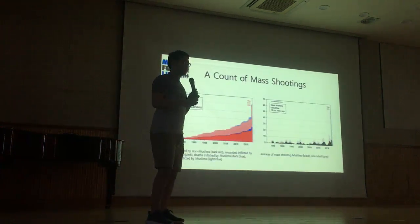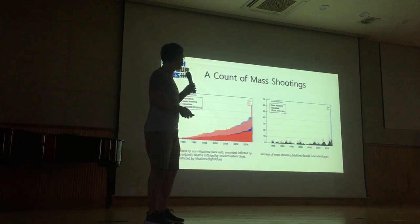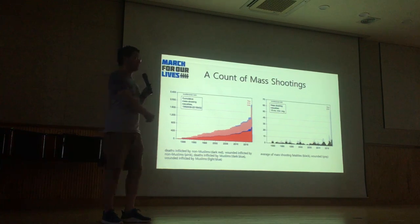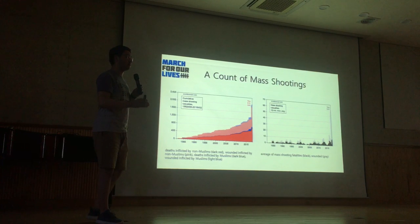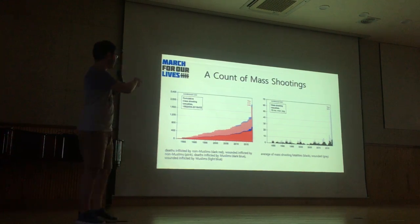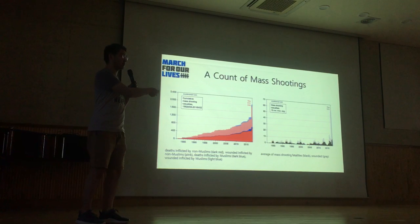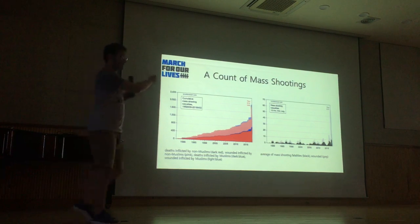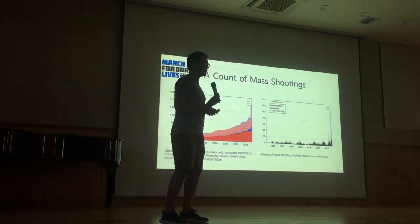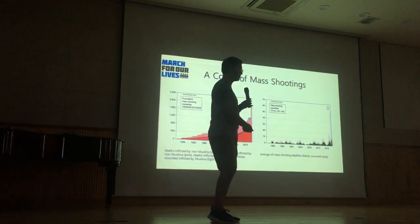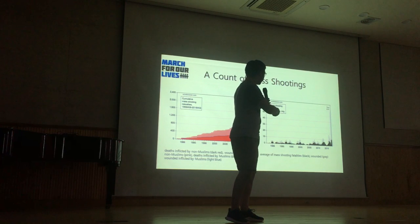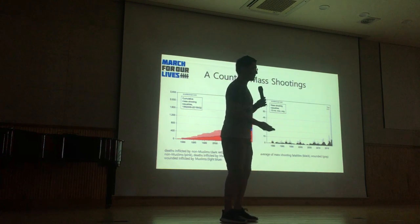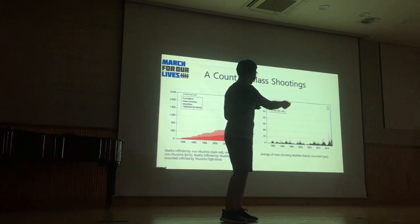I'll introduce you to some statistics. The left graph is a cumulative record of shootings up until now. Just because there are a very small number of Muslims who perpetrate these crimes, I want to highlight those blue parts — those are the Muslim shooters — and it shows that this is not a terrorism issue. You can see the clear trend: there's an increase every year in the number of people being shot. That's reiterated in the right graph, a 12-month moving average, and you can see it's increasing very steeply in recent years.